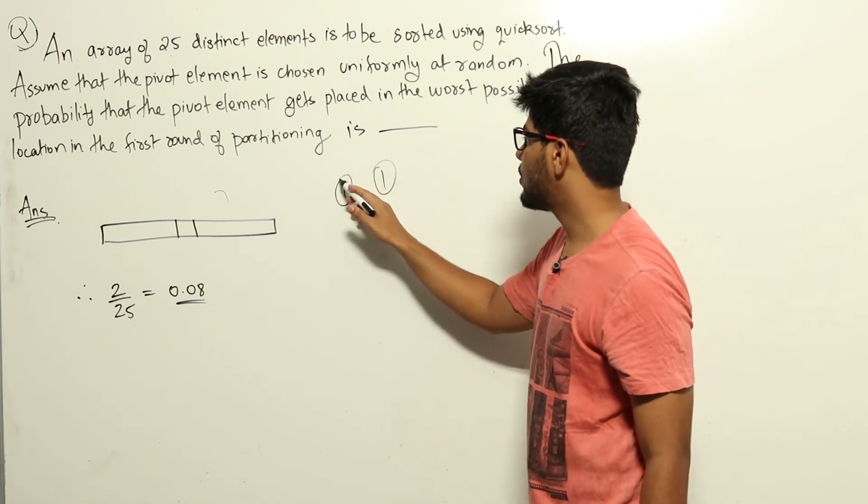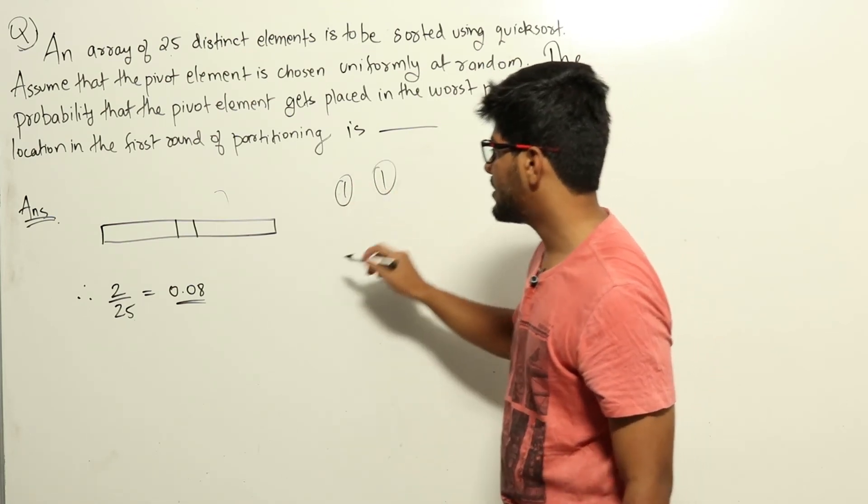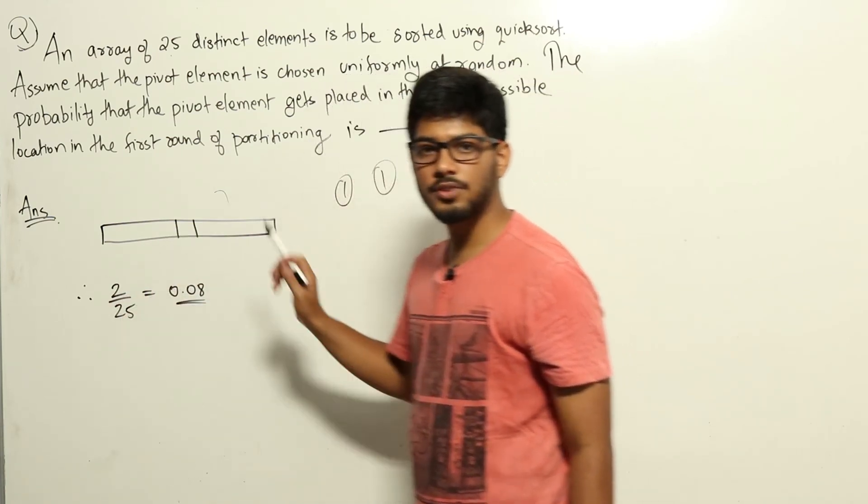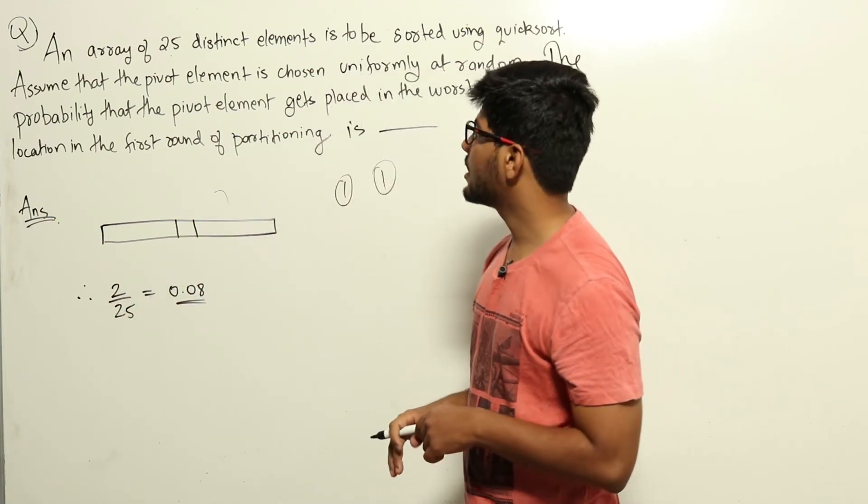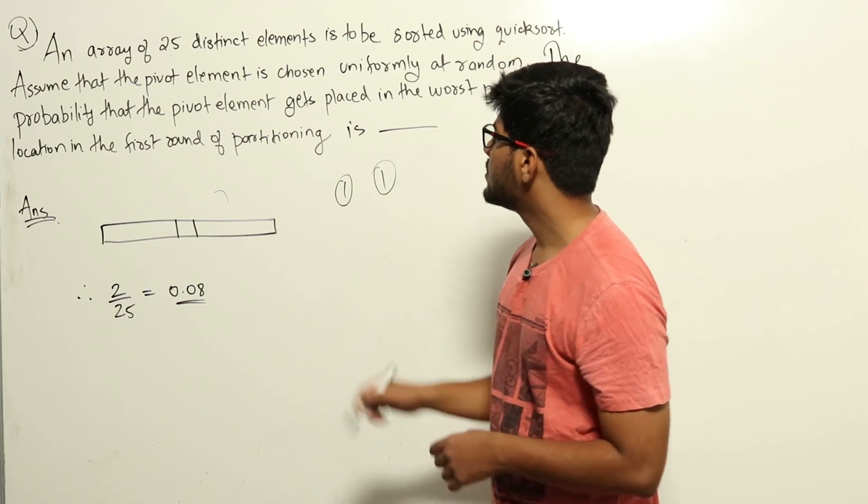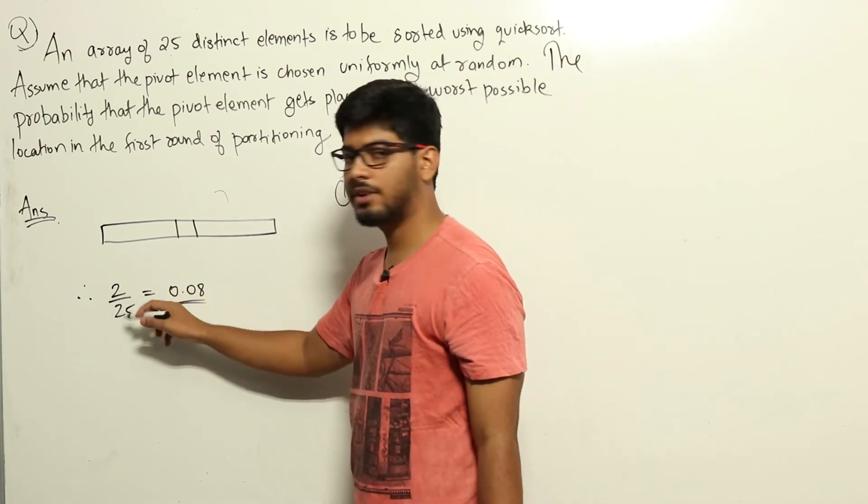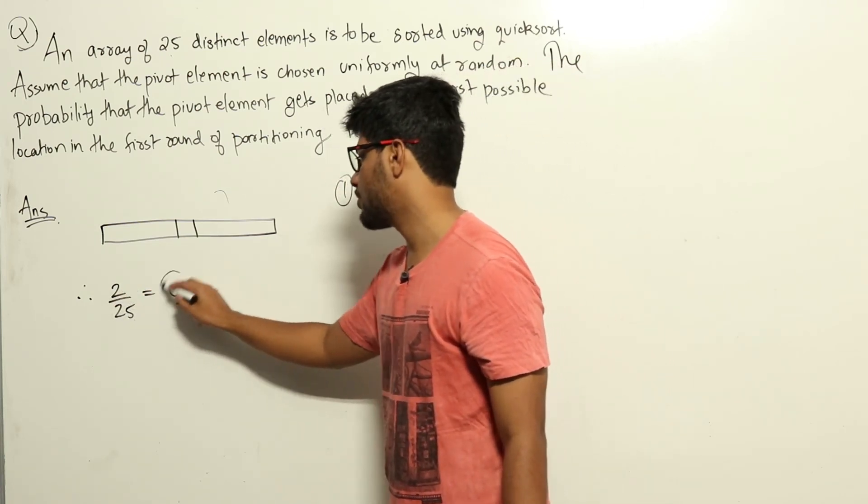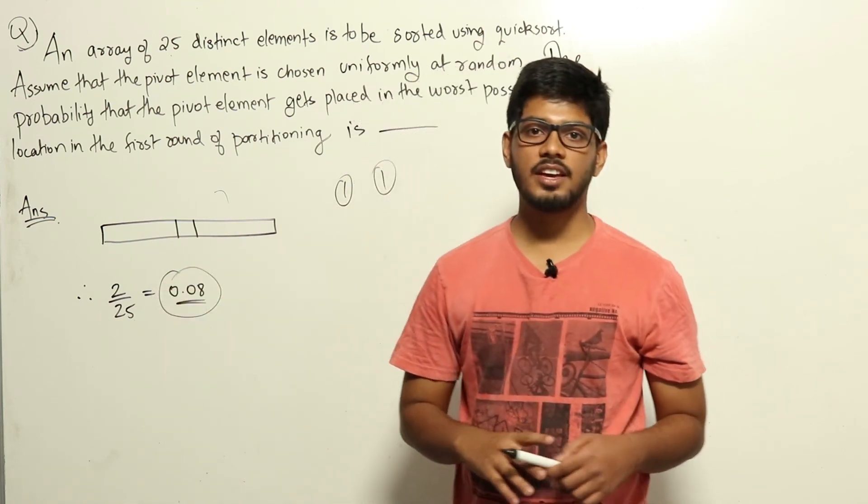So either the smallest or the largest element—there will be two elements out of 25. If you are choosing these two elements out of 25, that will give us the worst case time complexity. So the probability of that is 2 out of 25, which is 0.08. 0.08 is the answer.